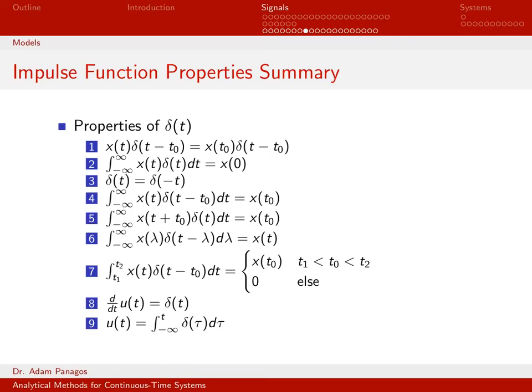Number three we don't use too often, but sometimes it's nice to know that delta of t is equal to delta of minus t — it is an even function, so to speak. Number four is just another way of stating the sifting property: here we are taking a product between x of t and an impulse at time t equals t0, and after I integrate, I end up with my signal at time t0.